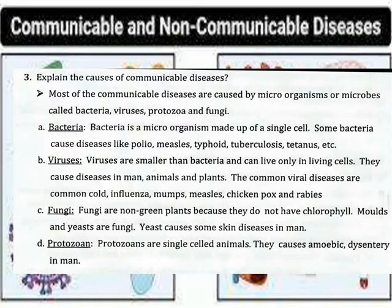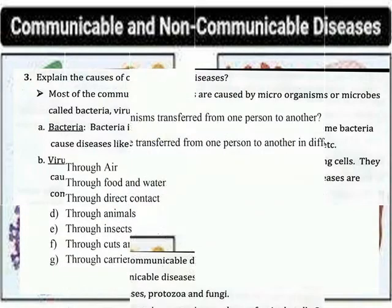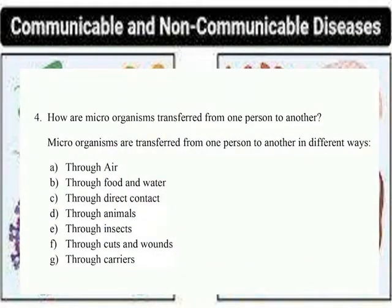Protozoa are single-celled animals. They cause amoebic dysentery in man. Microorganisms are transferred from one place to another in different ways: through air, through food and water, through direct contact, through animals, and through insects.